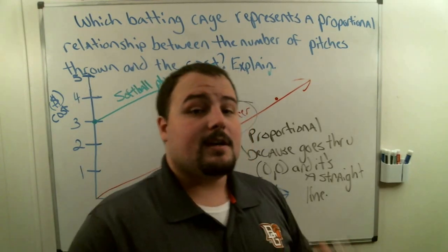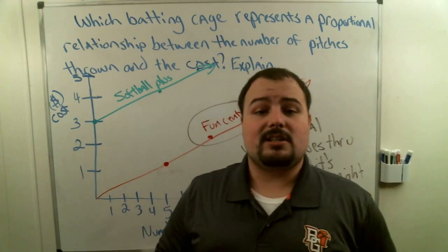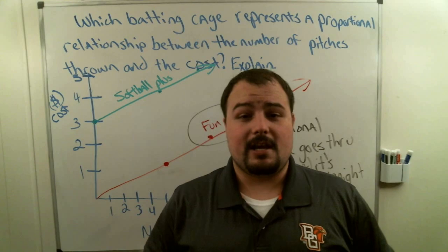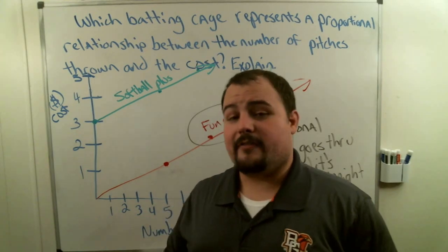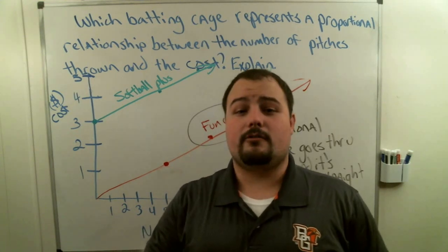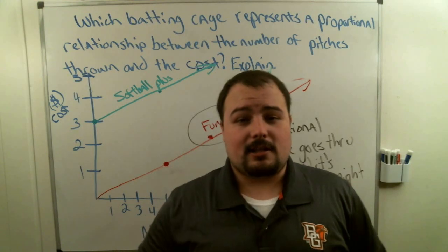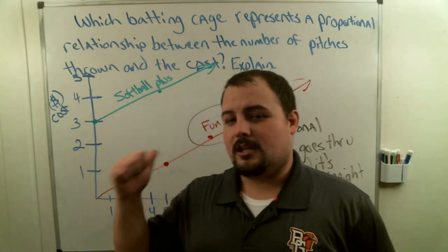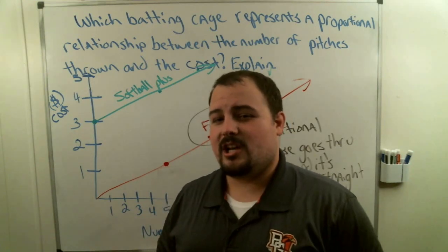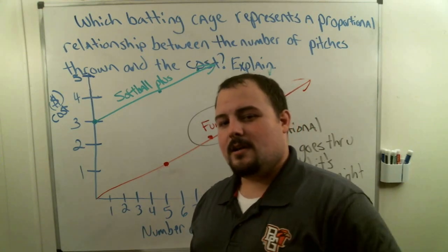Reminder: when graphing proportional relationships, it has to make a straight line and go through the origin. We're going to practice graphing in the classroom — you guys got three examples, that's all you need for today. If you need help graphing coordinates, please ask. Hopefully you liked this video. Hit that notification bell, subscribe to this channel so you get updates anytime I upload a new video. Thank you, and I'll see you tomorrow.